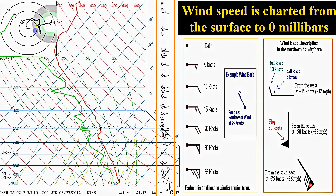Since we see one pennant, two long flags, and a short flag, we refer to our table: an open flag is 50 knots, two long sticks is 20 knots, and one short stick is 5 knots. So, adding it all up, 50 plus 20 plus 5 comes to a wind speed of 75 knots. This is a simple introduction on how to read a skew-t diagram. If you jump over to your week 7 questions, you will see that we put this into practice.